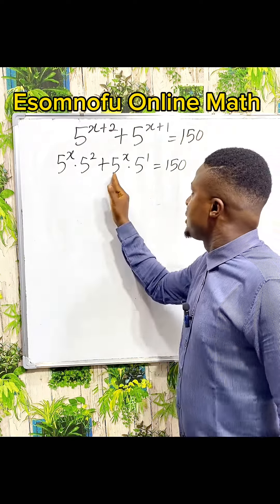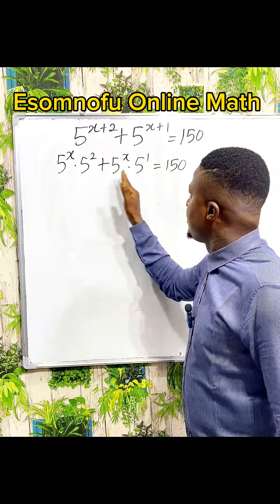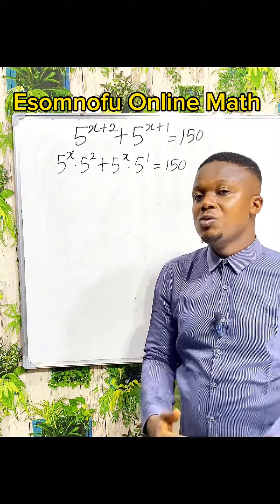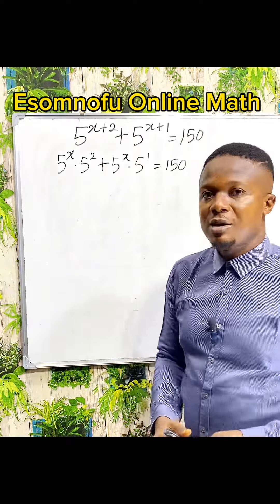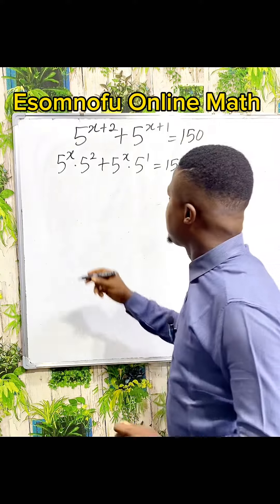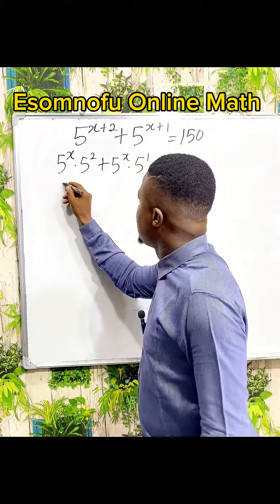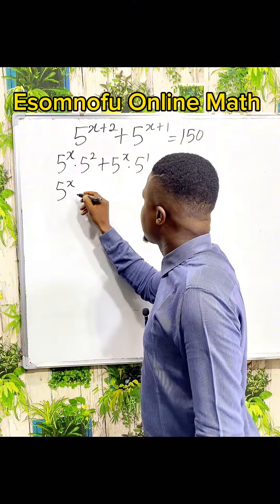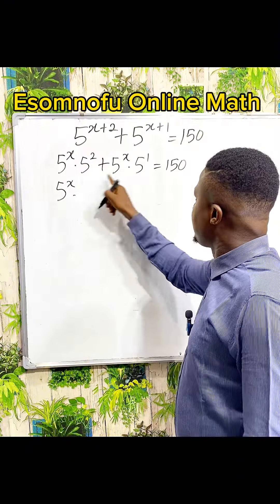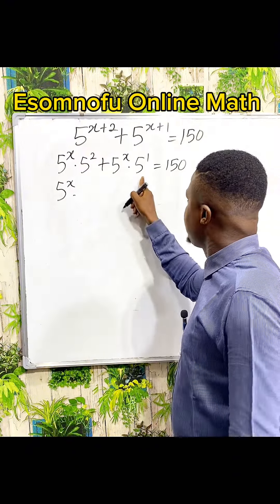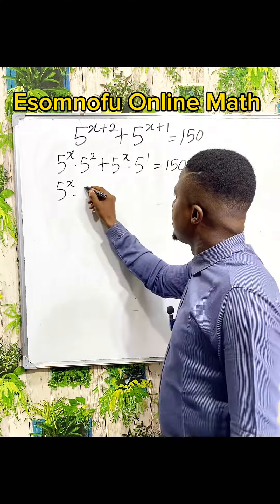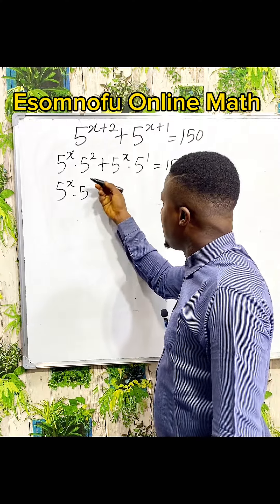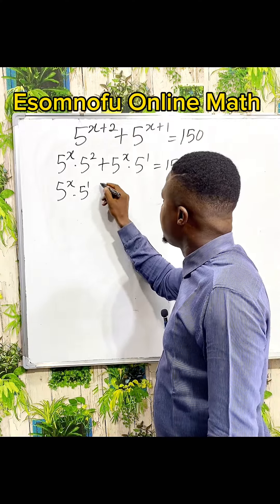Now, 5 to the power of x is common and 5 is also common, so we can do factorization here. Let us factor out — bring out 5 to the power of x, and also bring out 5, because 5 is present in both terms. So bring out 5, or 5 to the power of 1, as the case may be.